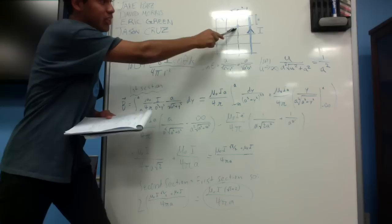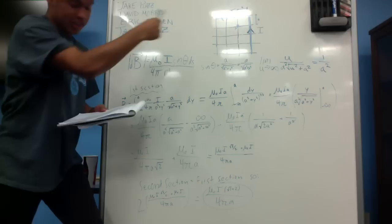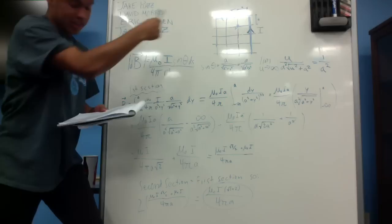So for problem 16, it is stated that we are trying to determine the magnitude and direction at point P from these lines of currents here. And what the problem states,